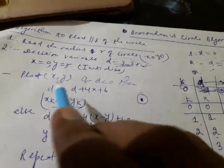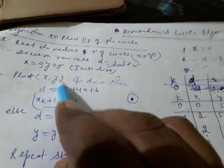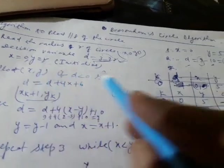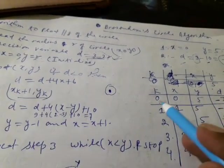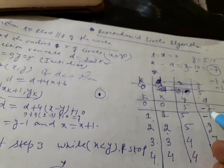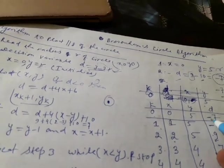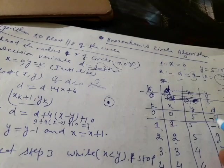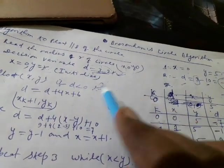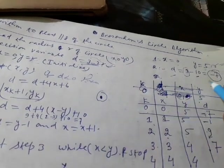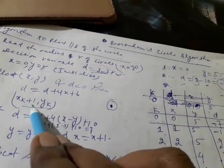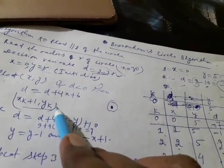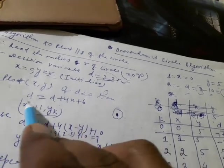Now we can go to plotting. First we have to plot the value of x and y. For iteration number 0, x equals 0 and y equals 5. We have already calculated the decision parameter value as minus 7. Based on the condition: if d is less than 0, we have to increase the value of x by 1 and y will remain the same.